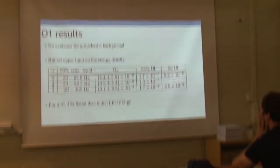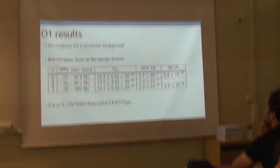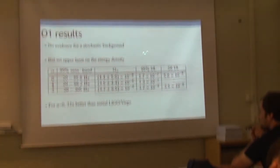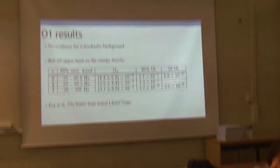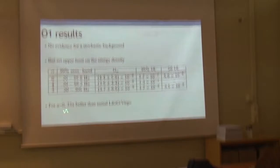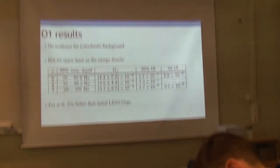We analyzed the data searching for a stochastic background during the first observation run. We didn't see anything yet — the sensitivity is not very good and the observation time was not long enough. But compared to initial LIGO and Virgo, we already have an improvement of a factor of 133 in the upper limit.